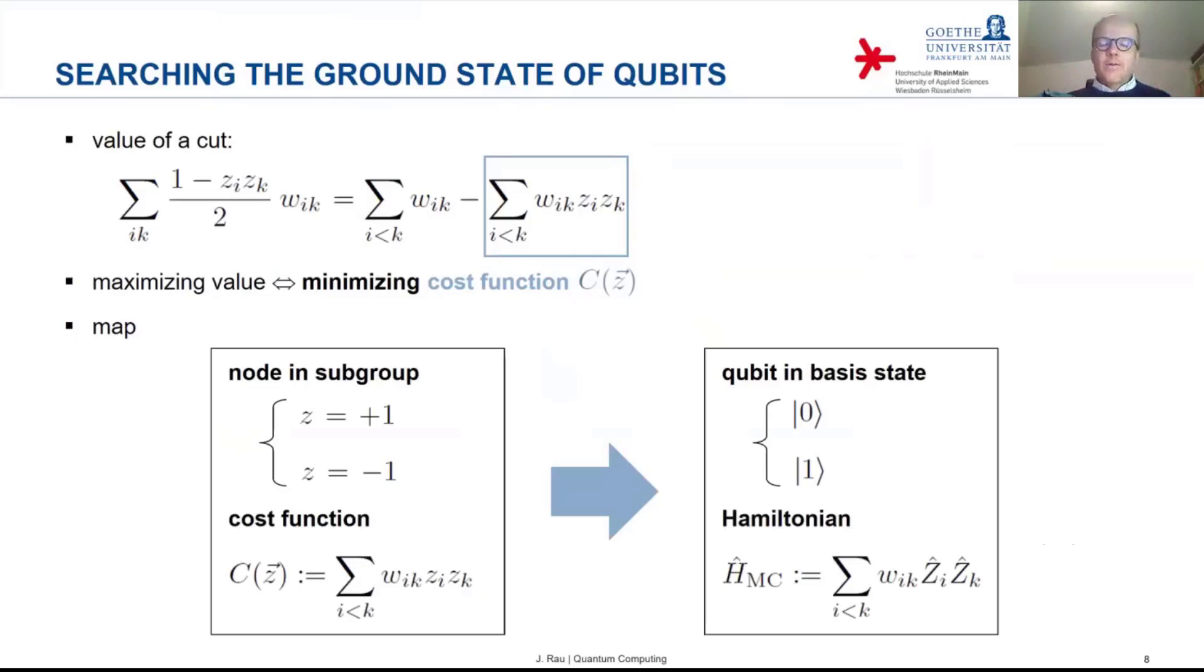Then the cost function for the classical problem can be mapped to a Hamiltonian for the qubits. The cost function for the classical problem has that form that we already saw. The Hamiltonian on the other side for the qubits is completely analogous. The variables z have become Pauli z operators with a label z_i or z_k, meaning that they refer to that particular qubit.